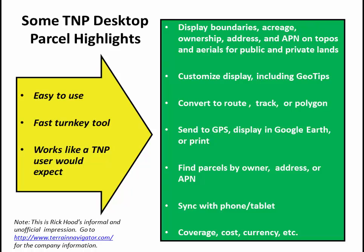It displays the boundaries, the acreage, and the APN number or the assessor's parcel number on topos and areas on public and private lands. If available, the ownership and address also pop up. It's customizable and you have the option of customizing geotips. You can convert the parcel to routes, tracks, polygons, or a marker. You can send it to the GPS, display it in Google Earth, print it out. One of the nice features is that you can do a lookup by parcel number, which is the APN number, and often by ownership and address. It syncs nicely with the TNP mobile phone or tablet option and the cost is about a hundred bucks a year. The coverage is about 80 or 90 percent of the U.S. so far, and a subscription needs to be renewed in order to have access to this. The official word is at TerrainNavigator.com.